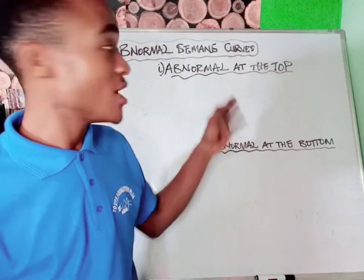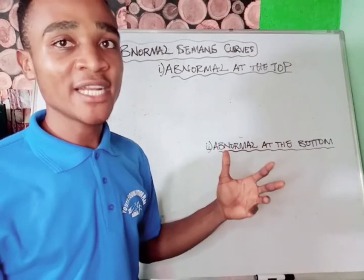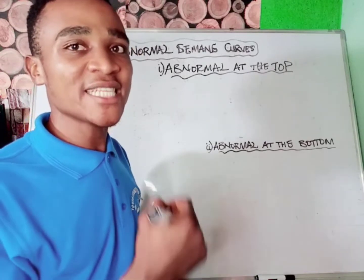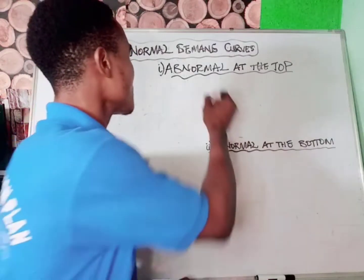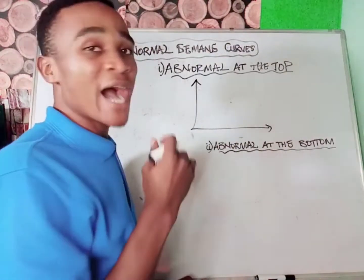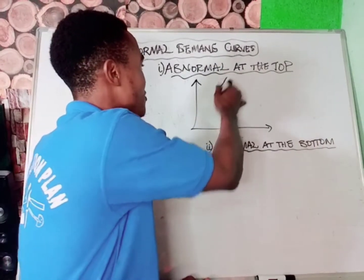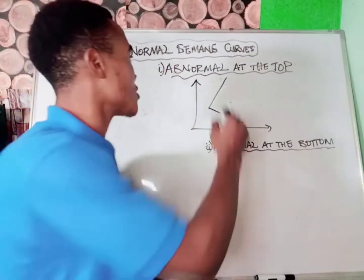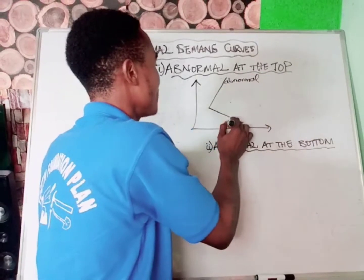There are two types of abnormal demand curves. We have abnormal at the top and abnormal at the bottom. Abnormal at the top means demand does not slope downward from left to right — instead it has a supply shape. So at the top level we have abnormal demand, and here at the lower portion we have normal demand.